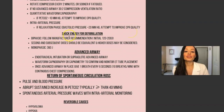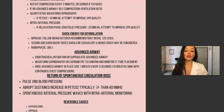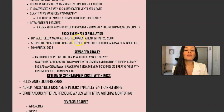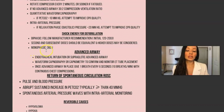In regards to shock energy for defibrillation: with biphasic defibrillation, the current moves in both directions — follow manufacturer recommendations. The initial dose is 120 to 200 joules; second and subsequent doses should be equivalent, and higher doses may be considered. With monophasic defibrillation, the current only moves in one direction — use 360 joules.